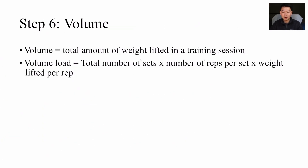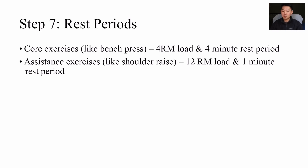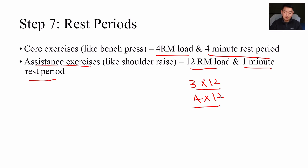Step six is volume. Volume is defined as the total amount of weight lifted in a training session, and volume load equals total sets times reps times weight lifted per rep. For rest periods: core exercises like bench press at up to a four-rep max load require about four minutes of rest between sets. Assistance exercises at 12-rep max — like three or four sets of 12 — only require one minute of rest. That's it for today — I hope you found that helpful. Please comment below with any questions and I'll see you next time.